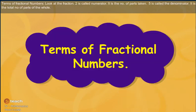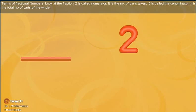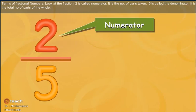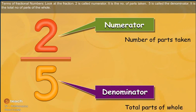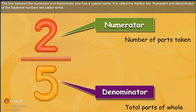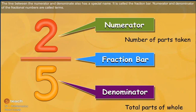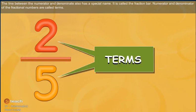Forms of fractional numbers. Look at the fraction. Two is called numerator — it is the number of parts taken. Five is called denominator — it is the total number of parts of the whole. The line between the numerator and denominator also has a special name; it is called the fraction bar. Numerator and denominator of the fractional numbers are called terms.